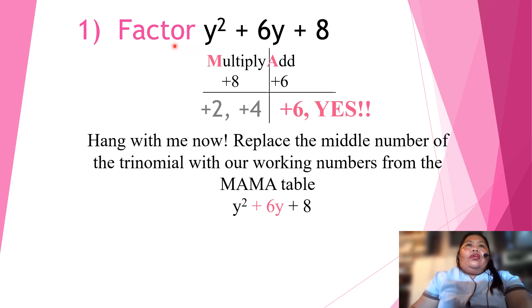So, we have here factor y squared plus 6y plus 8. If we're going to multiply the factors of 8, we have 2 and 4. If we are going to add, we have 2 plus 4 equals 6. Yes, no? Now, hang with me now. Replace the middle term of the trinomial with our working numbers from the MAMA table, or we call it multiply and add. That's why it's MAMA - multiply and add table. So, we have y squared plus 6y plus 8. So, this is now our middle term.